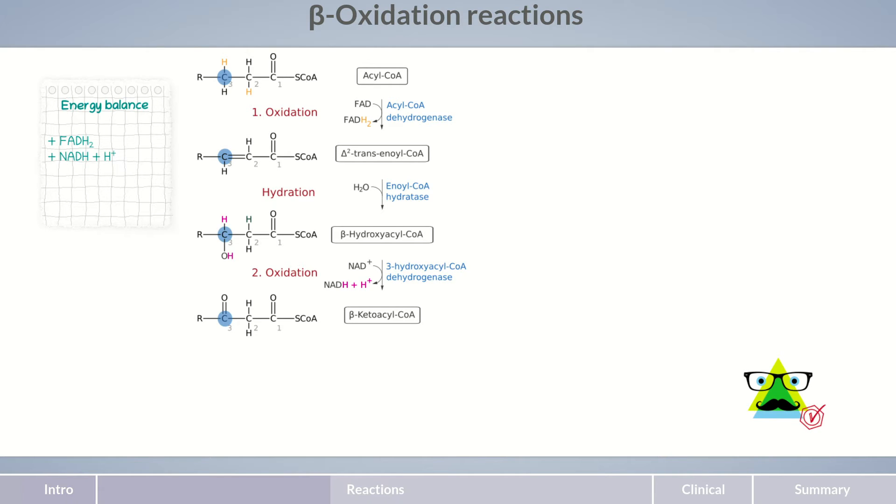Finally, in the fourth reaction, the thiolase enzyme transfers coenzyme A to the beta-carbon atom of the fatty acid. This both cleaves the molecule and concurrently produces a new thioester, with the reaction accordingly called thiolysis. In this reaction, the first two carbon atoms of the fatty acid, C1 and C2, are cleaved as acetyl-CoA.